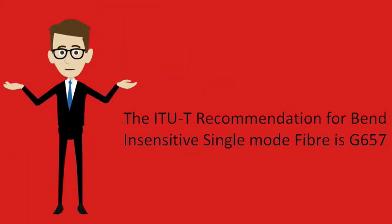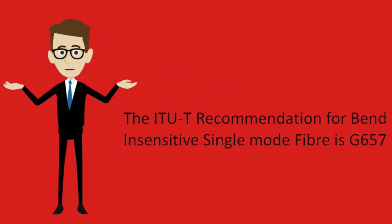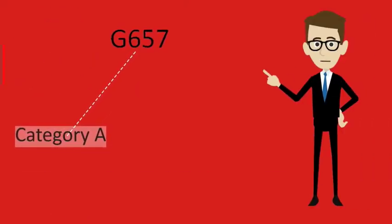The ITU-T recommendation for bend-insensitive single-mode fiber is G657. G657 is broken up into two main categories.